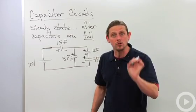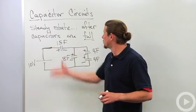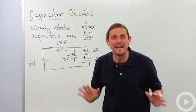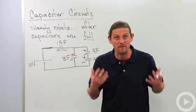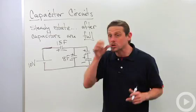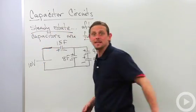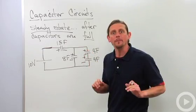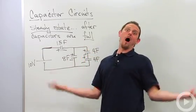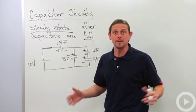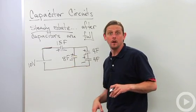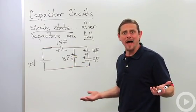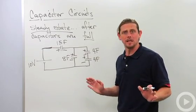So in a capacitor circuit, current flows until the capacitors are full. They can't eat anymore so no more current can be forced into them. This is called steady state because there no longer are any changes. Now aside from that qualitative understanding, the difference between a capacitor circuit and a resistor circuit - aside from that, we solve everything basically the same way.